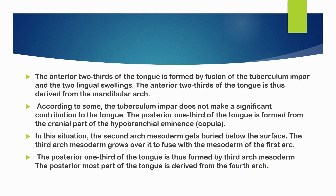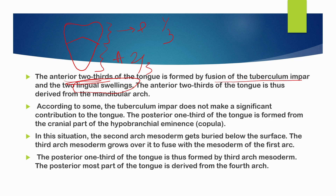The anterior two-thirds of the tongue is formed by the fusion of the tubercular impar with the lingual swellings. The two lingual swellings fuse with each other and the tubercular impar to form the anterior two-thirds. The anterior two-thirds of the tongue is thus derived from the mandibular arch. According to some, the tubercular impar does not make a significant contribution. The posterior one-third is formed from the cranial part of the hypobranchial eminence.